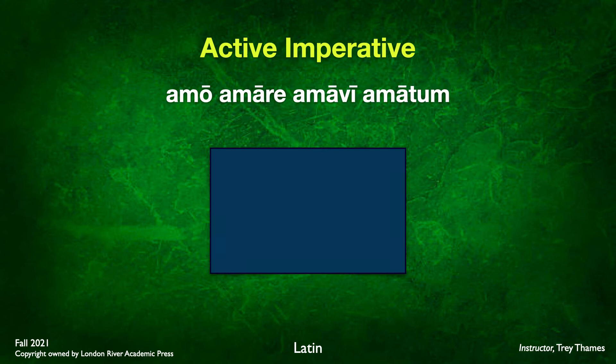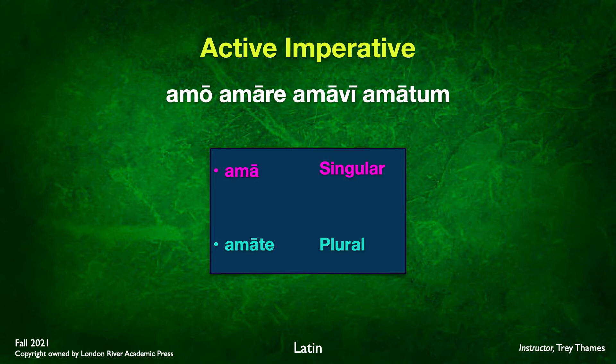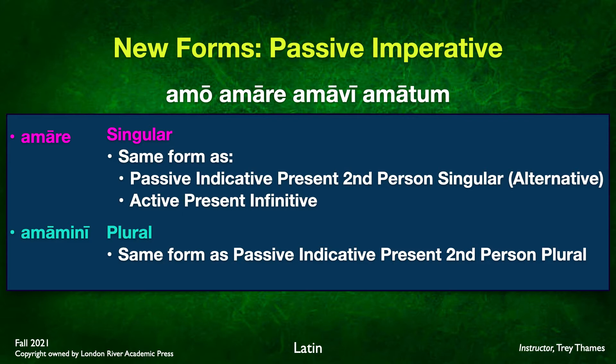Before we look at the new forms we'll have to learn for deponent verbs, I want to remind you of some old forms in the imperative that we have already learned. Here we have the first conjugation verb amo, amare, amavi, amatum. You remember the singular and plural imperatives: ama and amate for the plural. That is the former or old forms that we've previously learned. What we haven't learned is the passive imperatives — we simply haven't learned them because it hasn't been a part of our studies thus far.